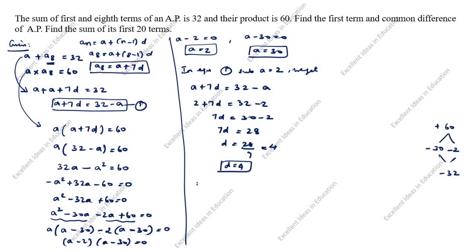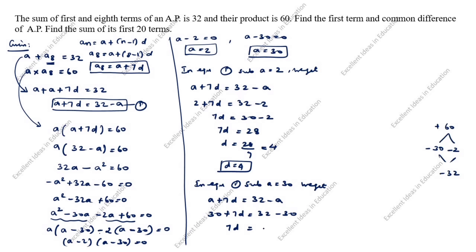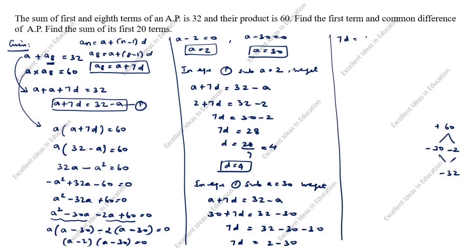Now substituting A = 30 into equation 1: A + 7D = 32 minus A, so 30 + 7D = 32 minus 30 = 2. Therefore 7D = 2 minus 30 = minus 28, so D = minus 28 divided by 7, which gives D = minus 4.